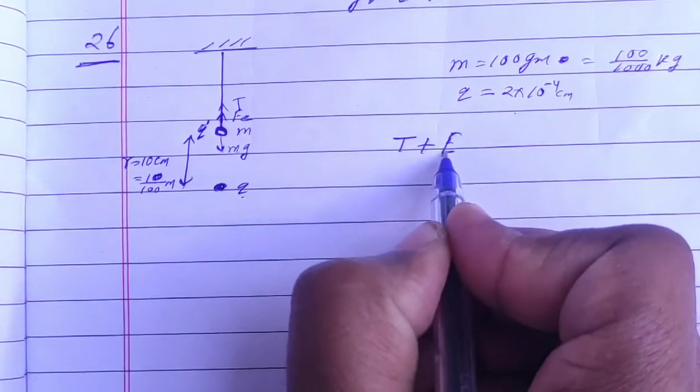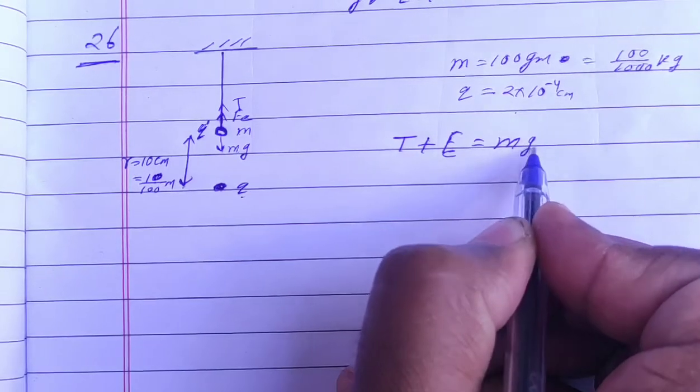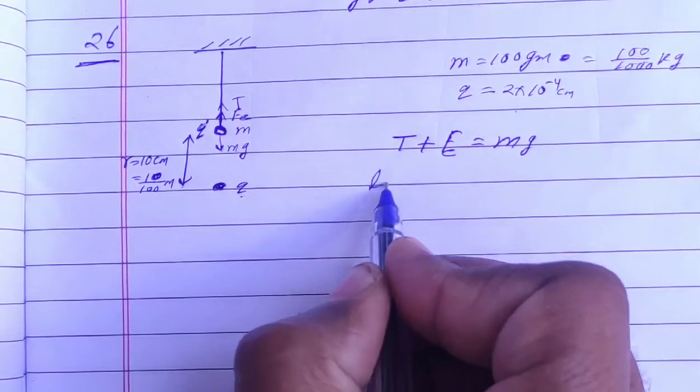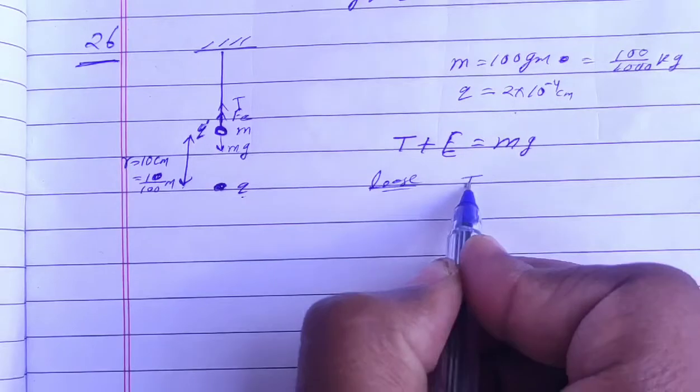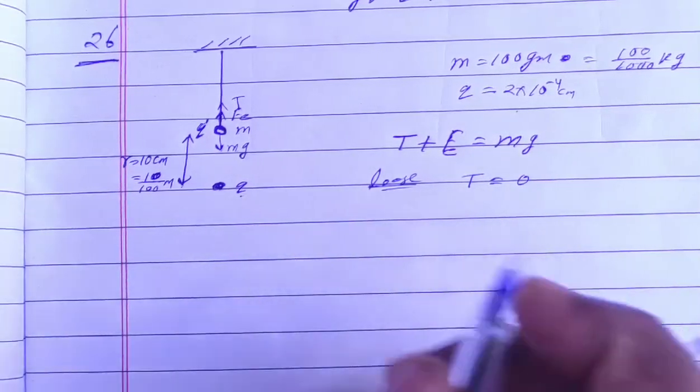The equation becomes: Tension plus electrostatic force equals mg. Now to make the string loose, we need to make the tension zero. If tension is zero, then the electrostatic force should be at least equal to mg.